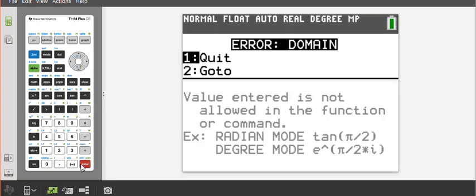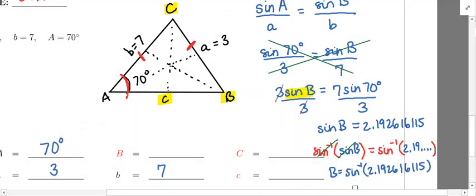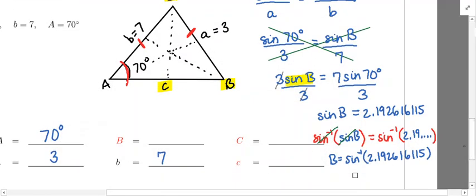You can see this is a domain error, and that makes sense because look what you're plugging into sine inverse. You're plugging in a number bigger than one. Remember the domain of sine inverse, you can only plug in numbers between negative one and positive one, including negative one and positive one. 2.19 blah blah blah is bigger than one, so the domain error could have been expected.